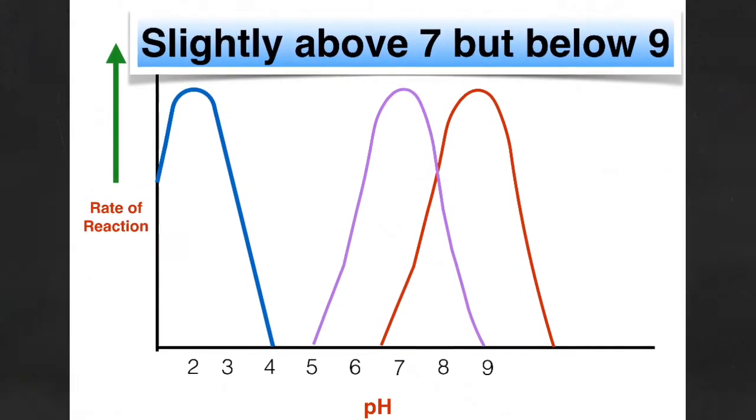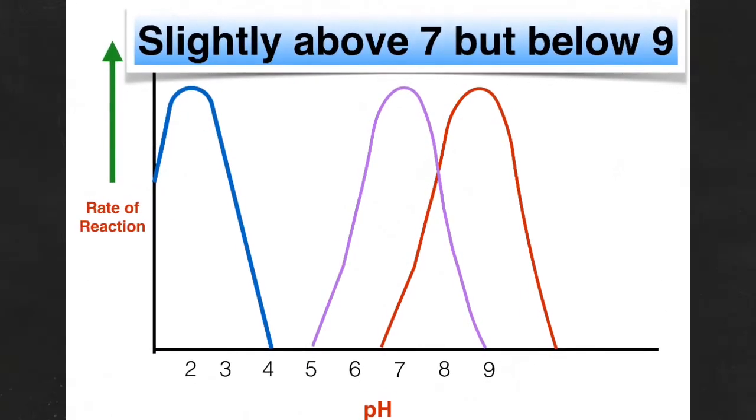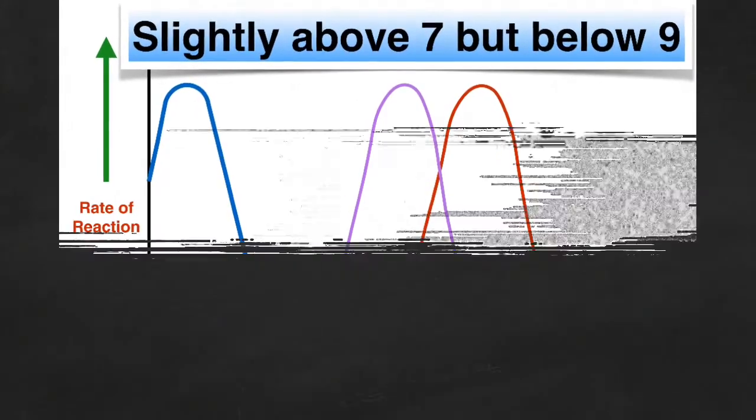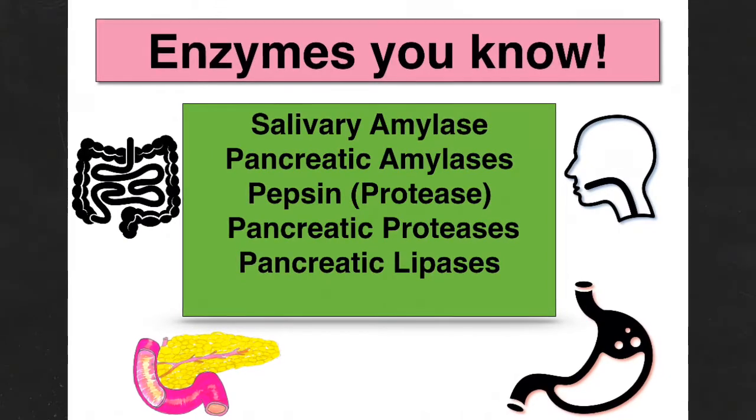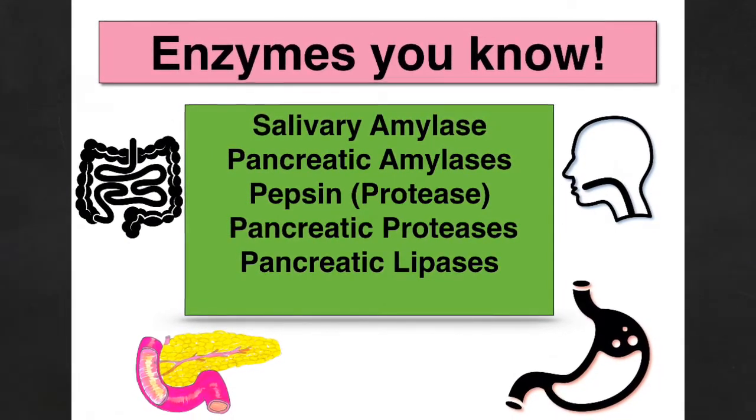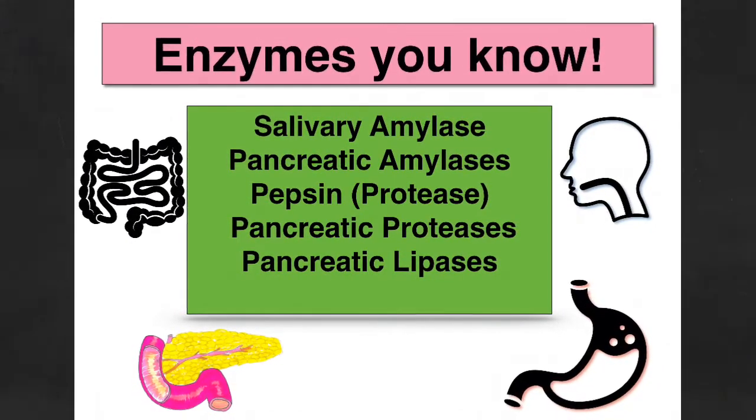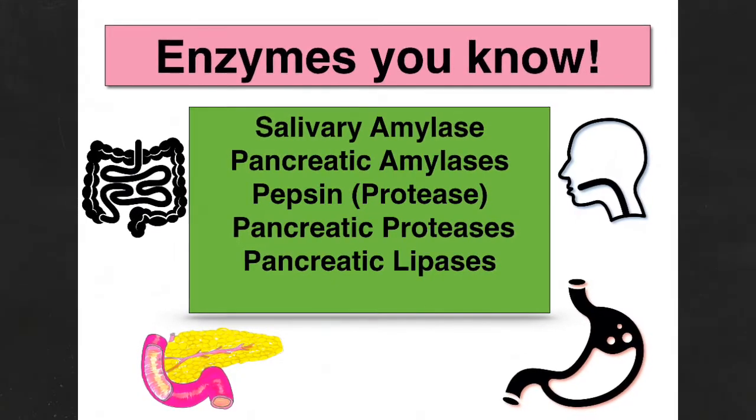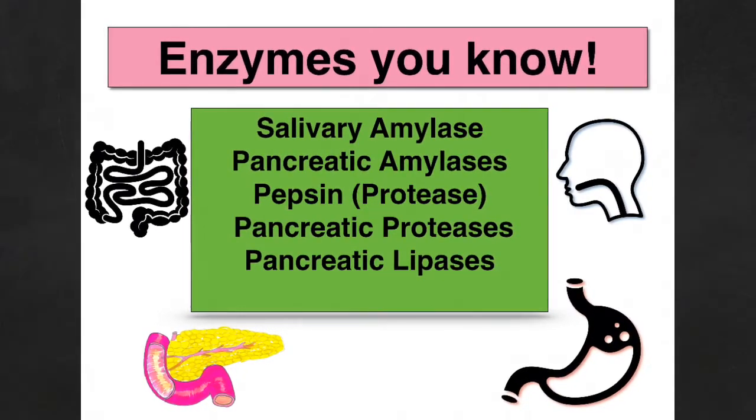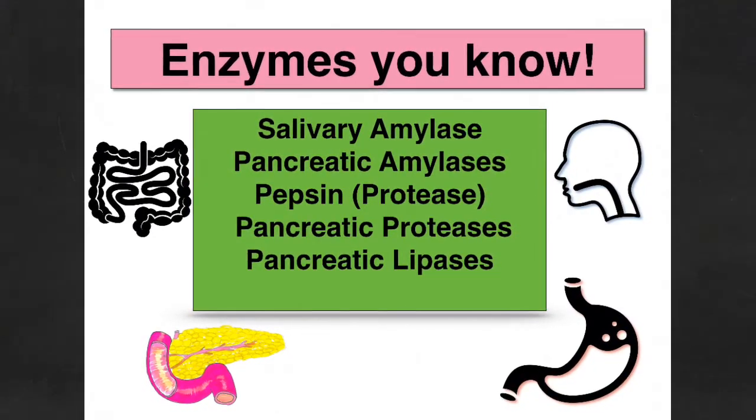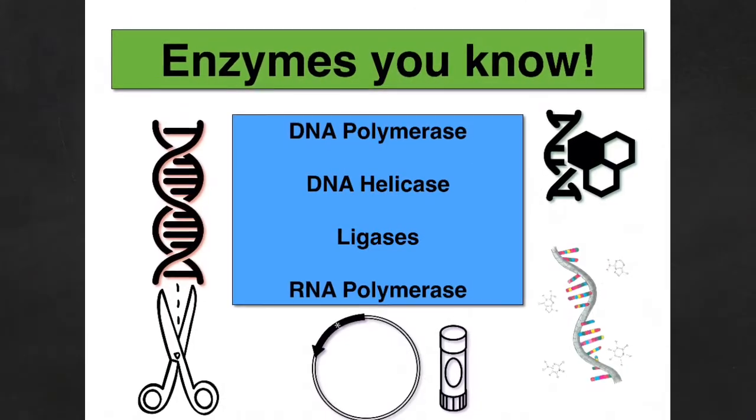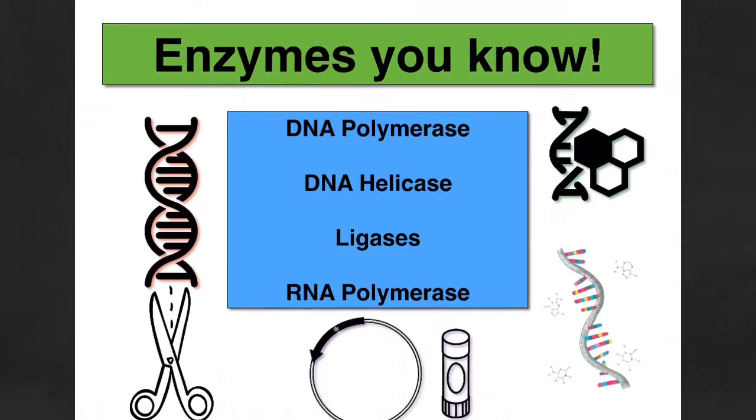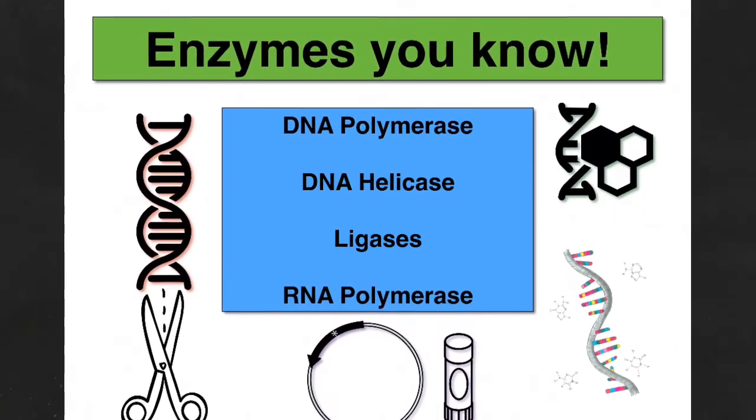So their optimal pH will be somewhere above 7 but below 9. So here's a list of some of the enzymes which you should know and which you will have encountered on your course. So salivary amylase, pancreatic amylases, pepsin which is that protease found in the stomach, pancreatic proteases and pancreatic lipases, all found in digestion. You should also have encountered some enzymes in those chapters connected with DNA and genetic engineering.